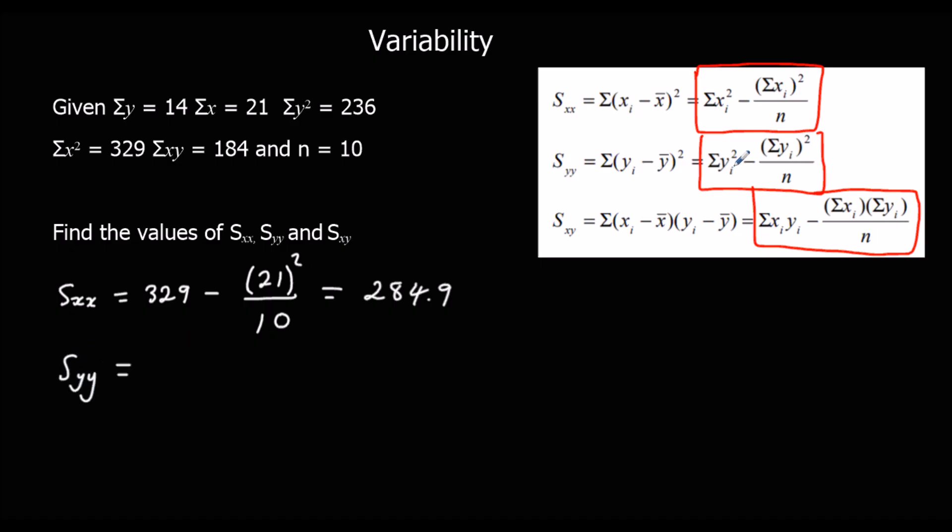SYY is the sum of the Y squareds, which is 236, minus the sum of the Y's, which is 14 squared, and divide by how many, which is 10. So I'm going to type it into the calculator, and we have 216.4.